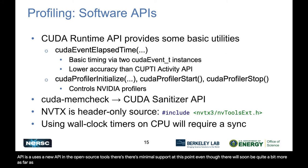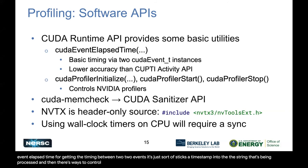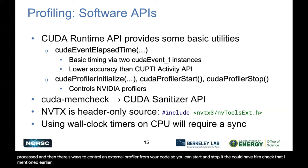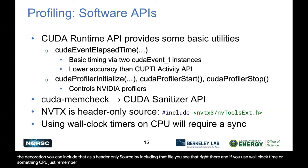As far as building something into your software, the CUDA runtime API has some basic utilities you can use. For example, CUDA event elapsed time for getting the timing between two events — it just inserts a timestamp into the stream being processed. There are also ways to control an external profiler from your code so you can start and stop it. The CUDA memcheck I mentioned uses the CUDA sanitizer API, so you can implement CUDA memcheck within your code. You can include NVTX as a header-only source. And if you use wall clock timers on the CPU, remember those wall clock timers are meaningless unless you do a sync before them.